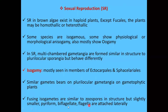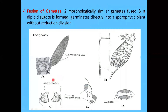The fusing isogametes are similar to zoospores in structure but slightly smaller, pear-shaped, and biflagellate with two flagella attached laterally. Fusion of two morphologically similar gametes produces a diploid zygote, and that zygote germinates directly into a sporophytic plant without any reduction division or meiosis.